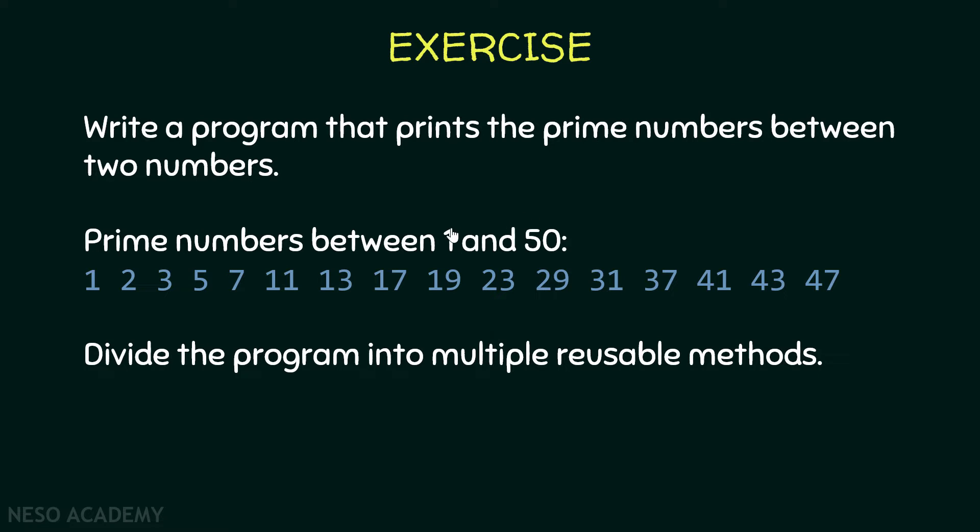While we are looping over these numbers, we want to check if there is a prime number. If there is a prime number, we are going to print it. So we have two functionalities: we want to loop over the numbers and print the prime numbers, and we want to find the prime numbers. So we will have a method that prints the prime numbers and another method that finds the prime numbers, and we will use the find method inside the print method.